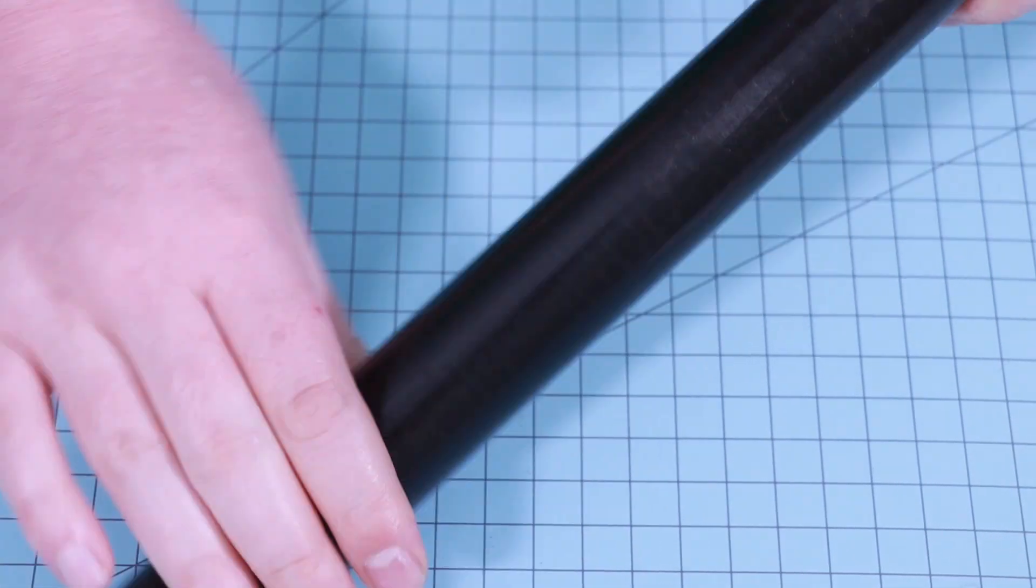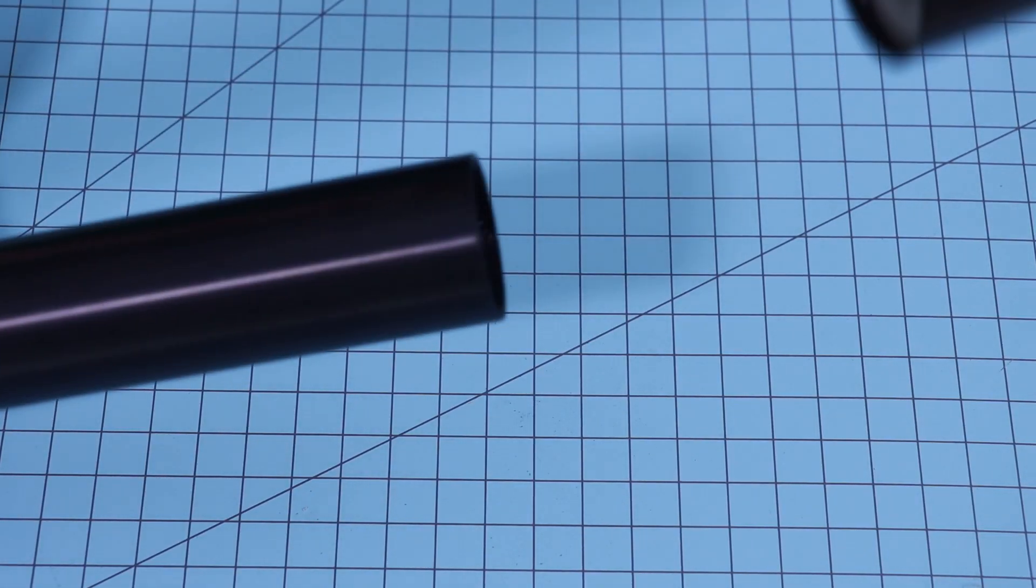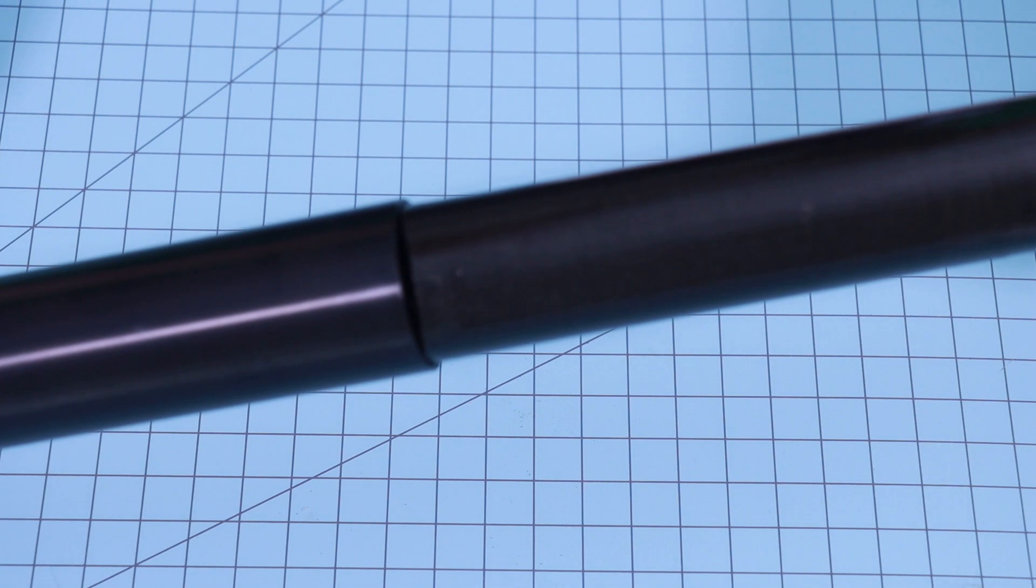Now I'm going to lube up the entire liner, giving it just enough to get it shiny so it doesn't stick inside of the casing after it's fired. Now let's slide the liner into the motor casing.